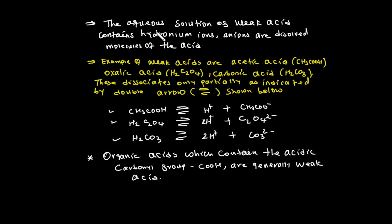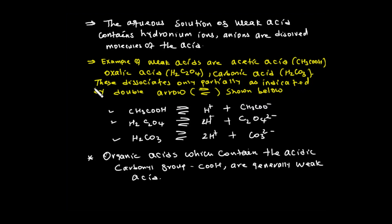Examples of weak acids are acetic acid, oxalic acid, and carbonic acid. These are partially dissociative. The dissociation of weak acids is indicated by a reversible arrow, showing that the reaction is reversible.